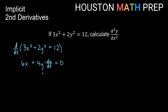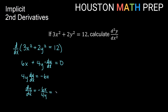Solving for our first derivative: 6x is not a dy/dx term, so we move it over to the other side. We get 4y dy/dx is equal to negative 6x. Then we divide by 4y on both sides, so we get dy/dx is equal to negative 6x over 4y. If we reduce that, we get negative 3x over 2y. So dy/dx is equal to negative 3x over 2y for our first derivative.